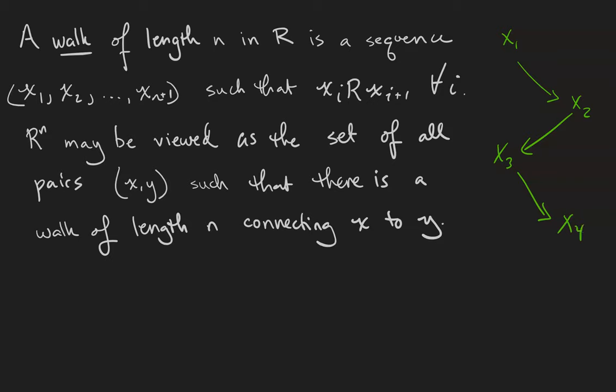The composition R^n may be viewed as the set of all the pairs such that there is a walk of length n connecting the components of the pair. So for example, R is the relation consisting of the arrows between x1 and x2, between x2 and x3, between x3 and x4.